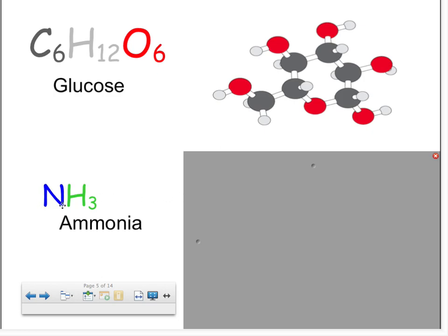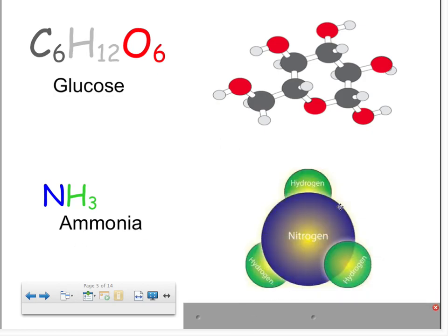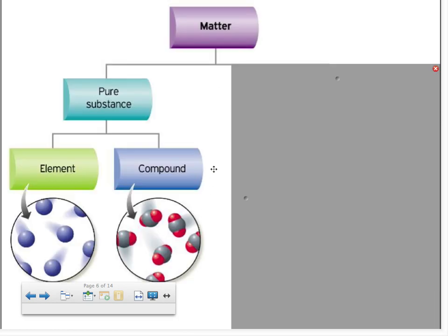Here we have N for nitrogen and three hydrogens, which is ammonia — one single unit with two different kinds of atoms. These are all compounds. As a recap: elements are made up of one kind of atom, while compounds are made out of more than one kind — you have to have at least two joined together, or you can have three.